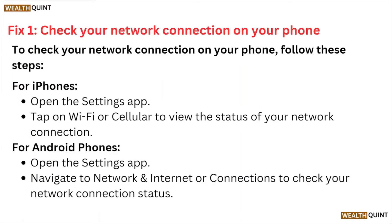Fix number one is check your network connection on the phone. To check the network connection on your phone, follow some of the steps. For iPhones, open the Settings app, tap on Wi-Fi or Cellular to view the status of your network connection. For Android phones, open the Settings app, navigate to the Network and Internet connection, and check your network connection status.